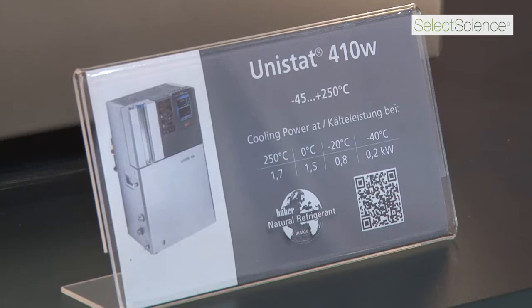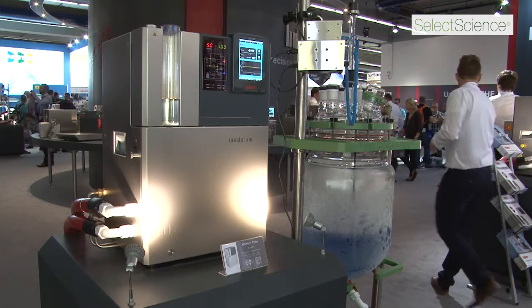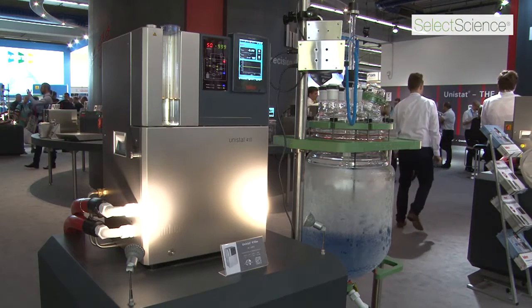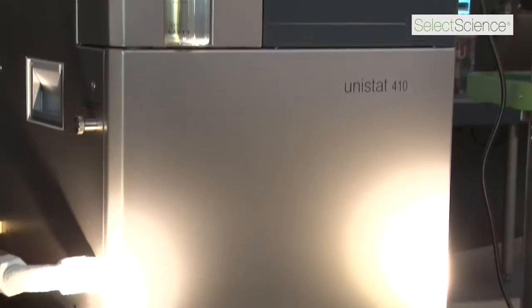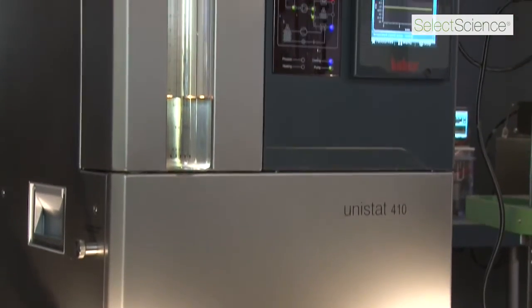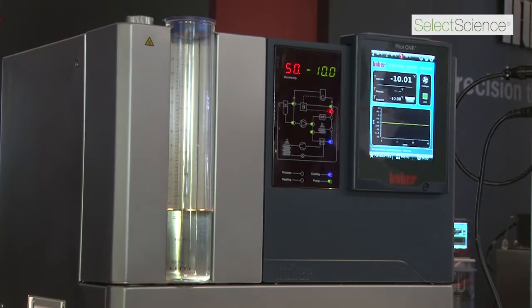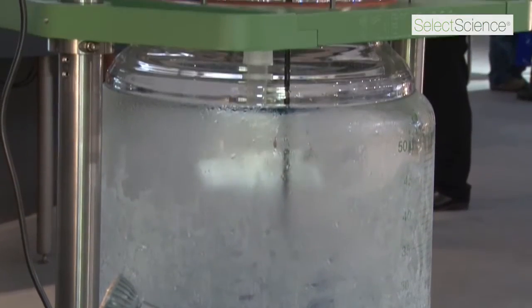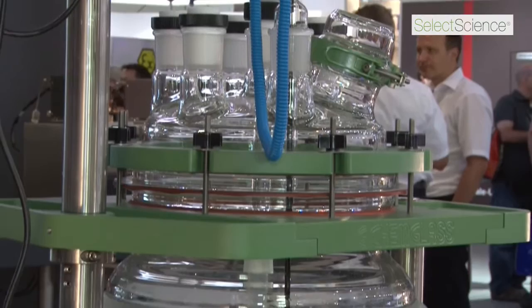The Unistat 410W is a small benchtop unit but with a lot of punch. It's a water-cooled unit, which means we can have a smaller condenser, which obviously contributes to its small size, but as we can see here it really does control a rather large reactor for its size.